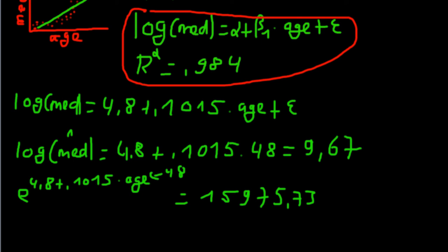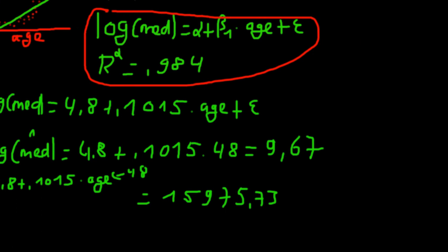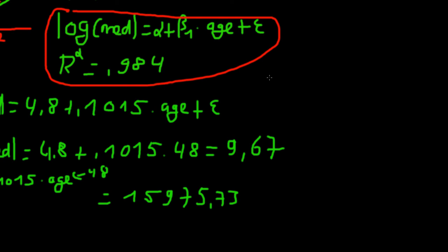There could also be another underlying relationship. If medical costs are quadratic rather than exponential, what we would do is take the square root of medical costs instead of the logarithm. The transformation would simply be: take the square root of medical costs and put that into the equation.